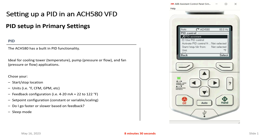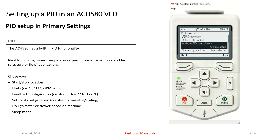So first thing I'm going to do is go down to 'Use PID Control' and enable it. Next item is when do I want the PID control active — that's typically always. If you had a unique application where you wanted a digital input to disable the PID control for some unique control needs, you've got that capability. But we're going to leave it as always active, as that's the most common.